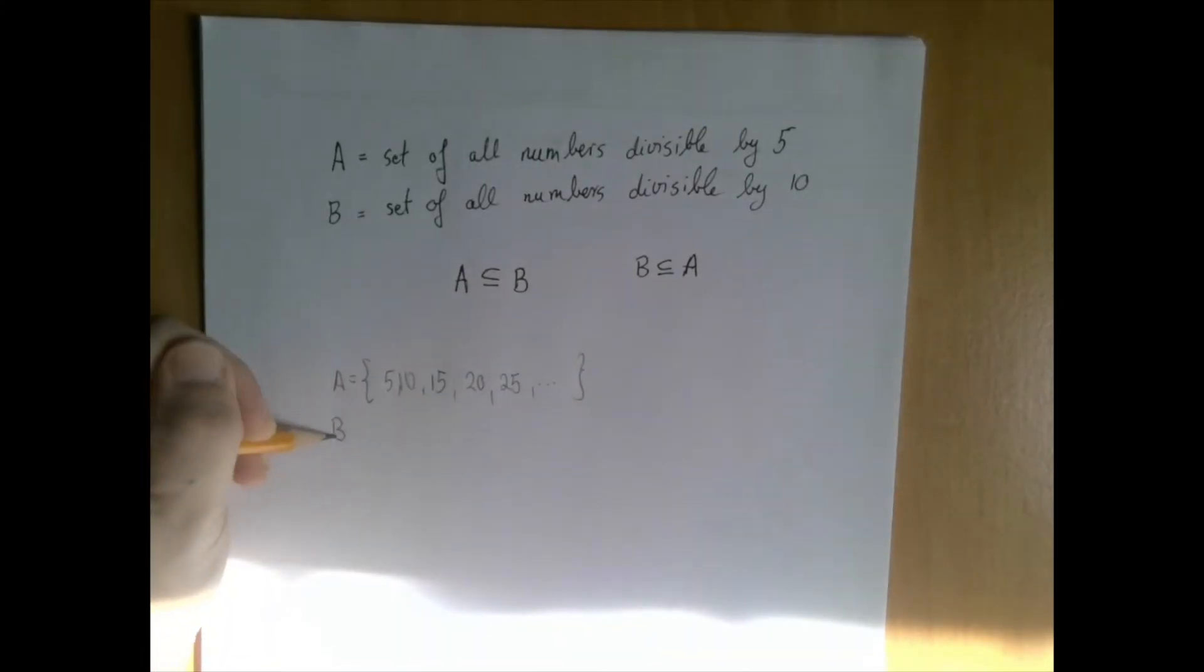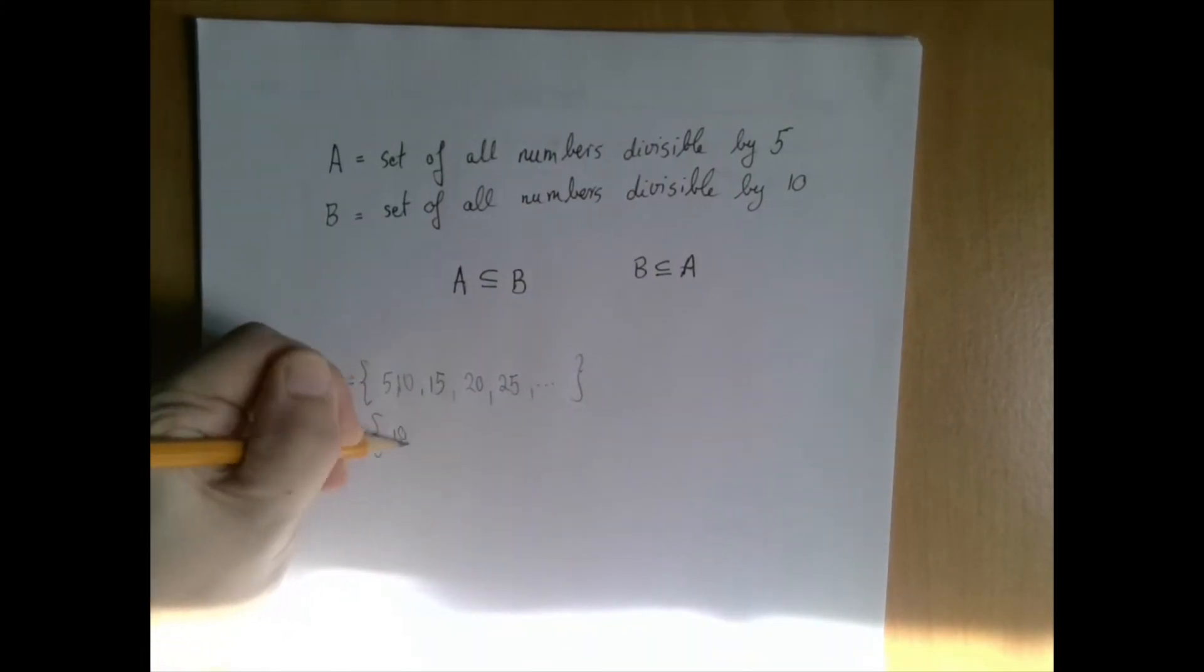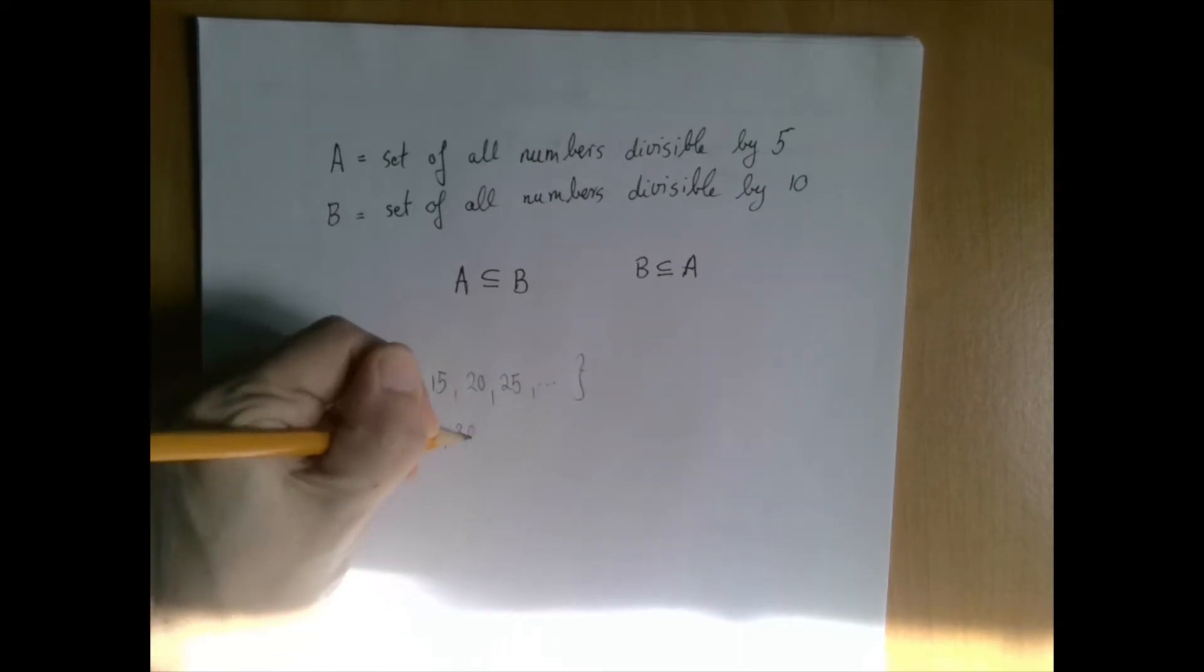And B would be the set of multiples of 10, such as 10, 20, 30, and so on.